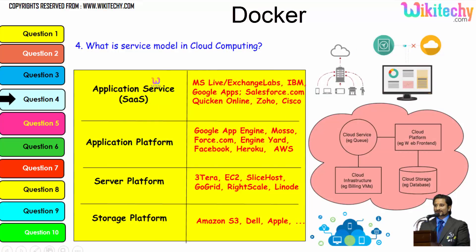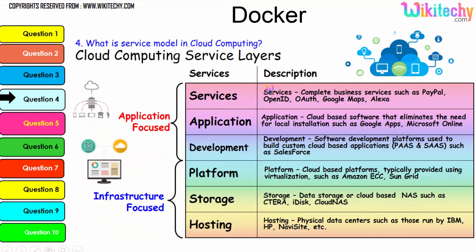Further digging into service models, the typical examples are: application services, application platform, and server platform. Storage platform is provided by Amazon S3 and Apple. The important service layers are services, application development, platform, storage, and hosting. These are important services which are commonly asked in cloud computing interviews.